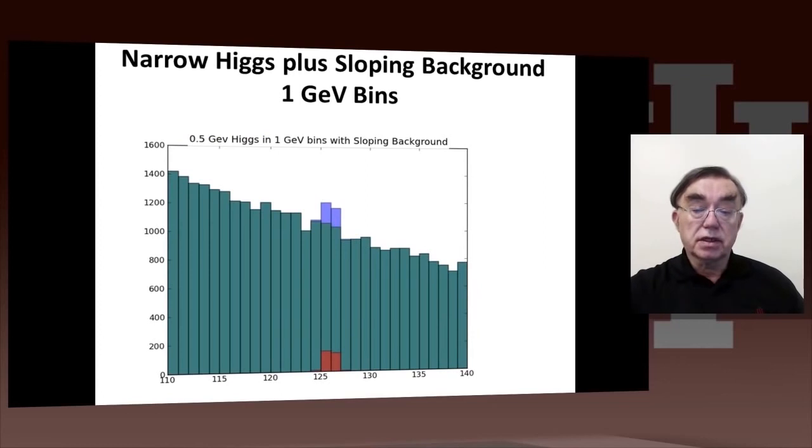And so here's the same data but plotted in one GeV bins. So twice as many bins, and you can see the Higgs is very clear now, because we have more particles per bin relatively in the Higgs compared to the background. Because we've halved the background by halving the bin size, but the Higgs are still dominantly just in two bins.